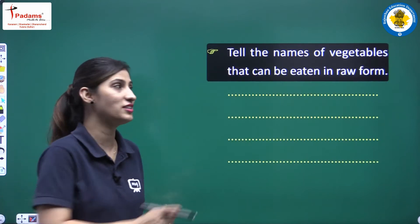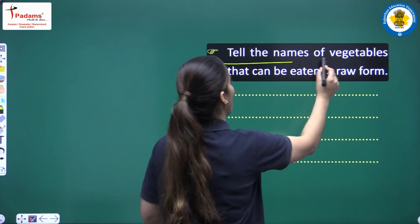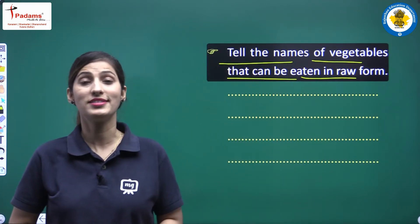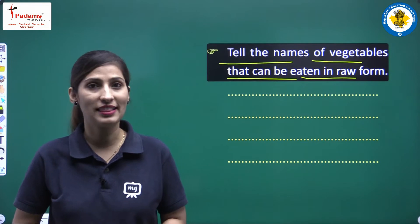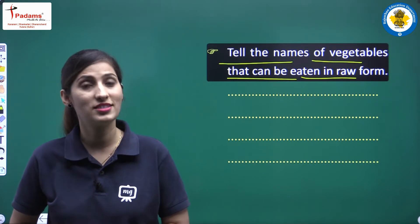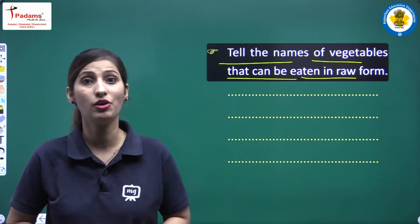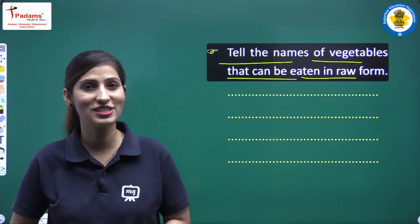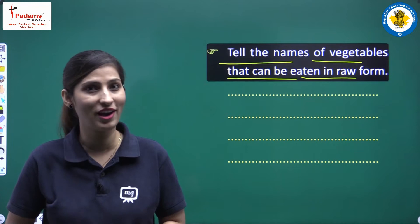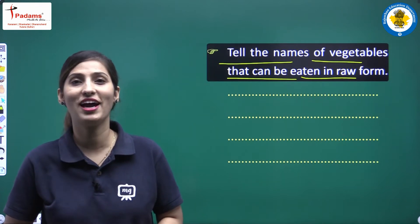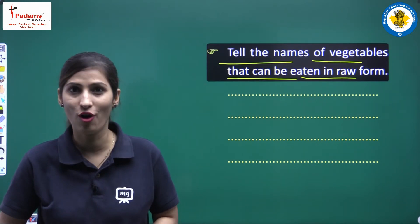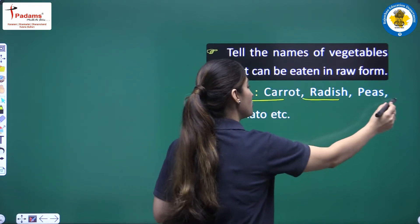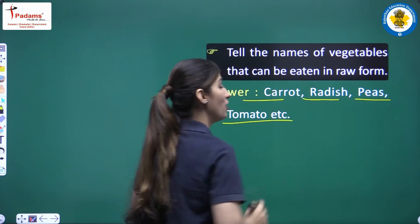Our second question is: tell the names of vegetables that can be eaten in raw form. We have discussed that there are some things that can be eaten raw — jin ko hum raw form mein kha sakte hain — for which cooking is not required. The examples are carrot, radish, peas, tomato, etc.